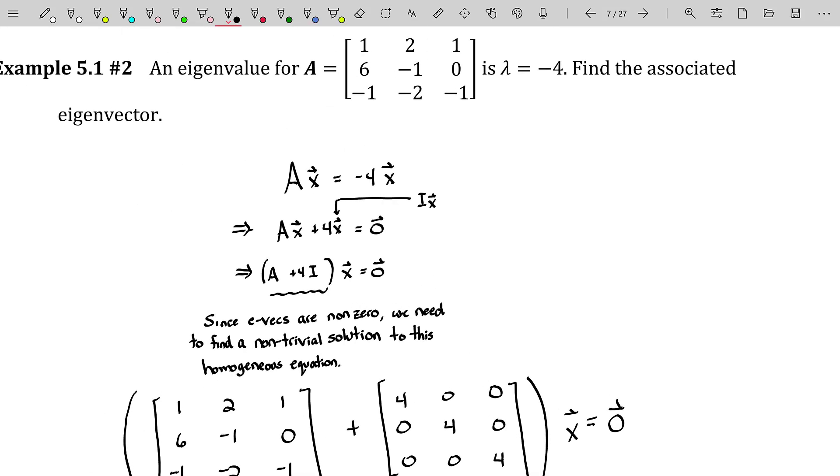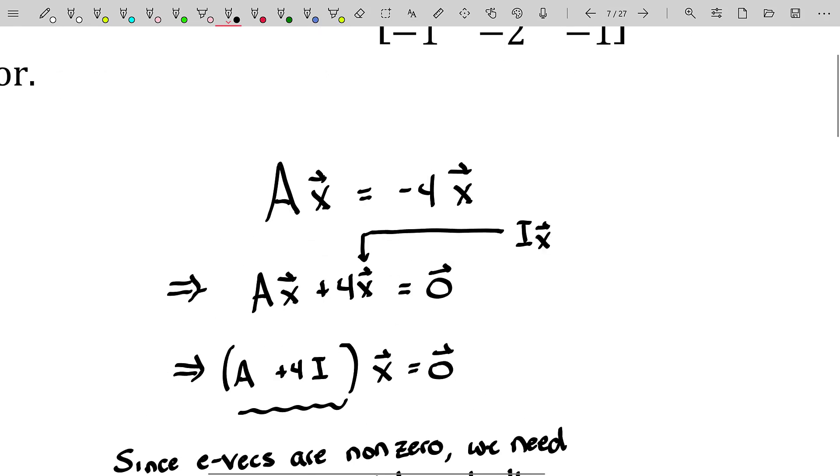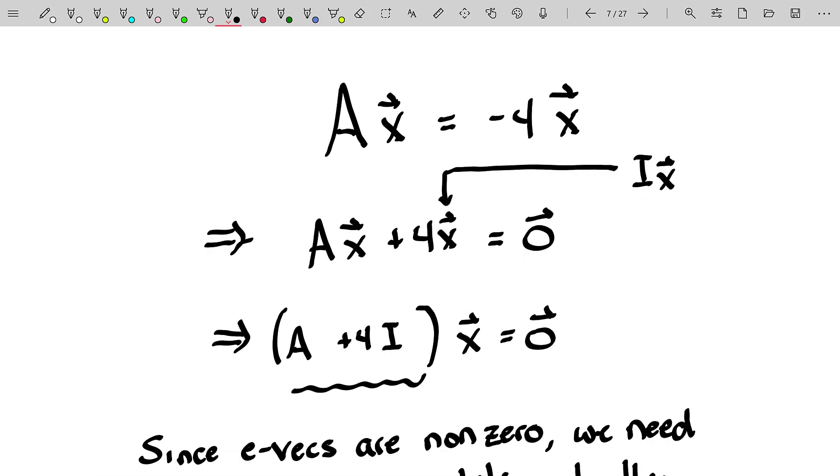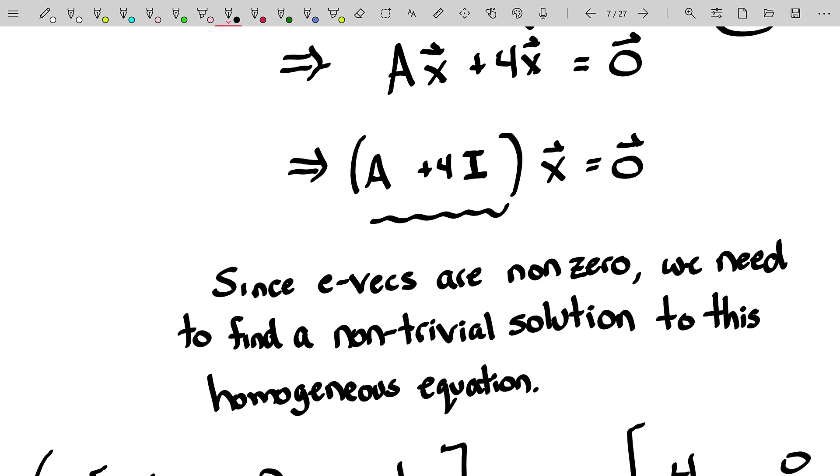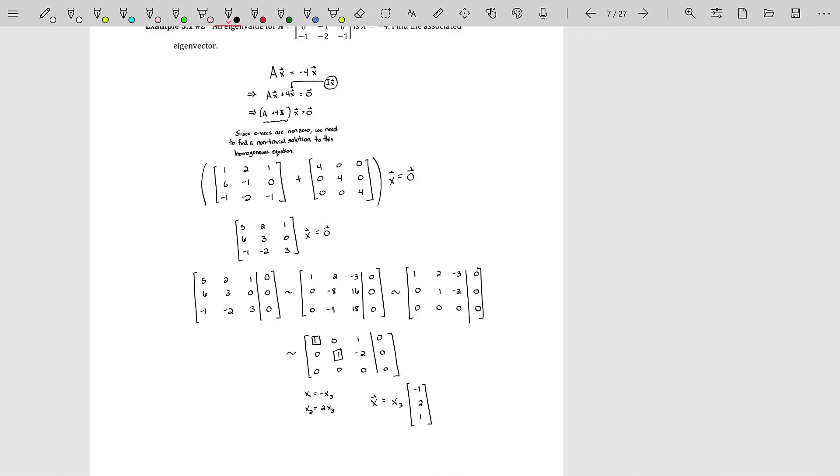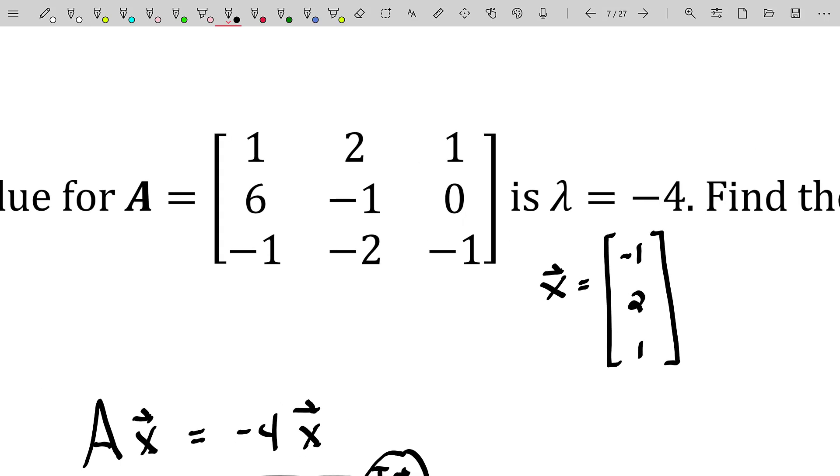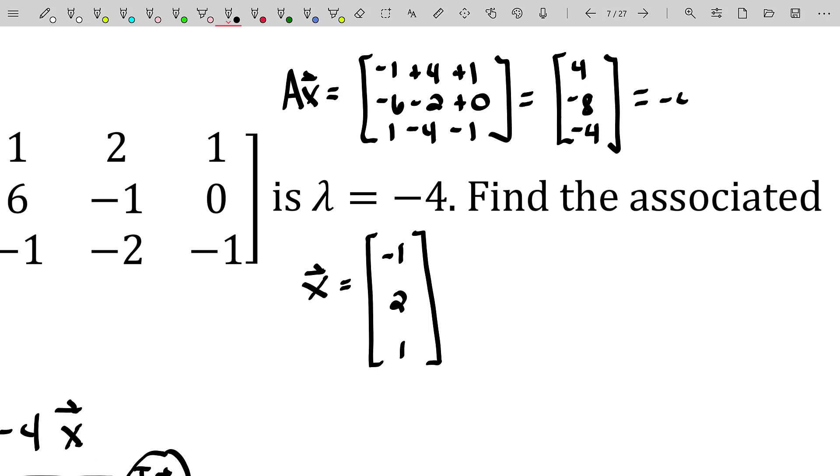So going back to the original question, an eigenvalue for this matrix is lambda equals negative four. Find the associated eigenvector. We started with, well, then A times an eigenvector must be negative four, the eigenvalue times the eigenvector X. Added four X to both sides. Rewrote X as the identity matrix times X. So that when we factored X off, we'd have the identity matrix right here. So we had a proper matrix addition. And then we solved that homogeneous equation and arrived at the vector negative one, two, one as the eigenvector. You can actually quickly double check that this is true by taking this eigenvector and multiplying it by A just visually here. You get down to that. But if you factor a negative four out of that vector, you get your original eigenvector back. So the eigenvector is negative one, two, one with eigenvalue negative four.